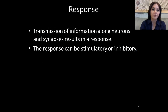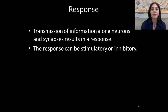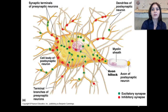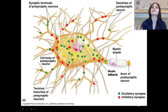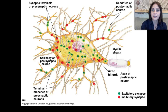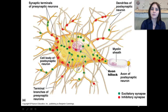Now, we have a response. The transmission of information along neurons and synapses results in a response. This response can be stimulatory or excitatory, or it can be inhibitory. Everything in green is excitatory — it's going to get passed to the next synapse, essentially saying this signal is very important and needs to get to the brain right away. The inhibitory ones are shown in red, basically saying stop — this does not need to get sent to the brain.